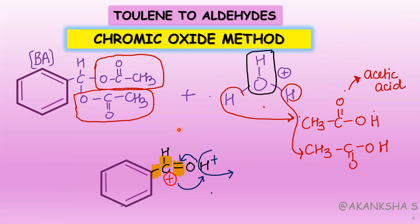These videos might be a bit lengthy because I'm explaining these reactions in detail — you may prefer watching at 2x speed if you already know this reaction. With this, we convert toluene to an aldehyde using chromic acid. I hope you have understood the method. Signing off, bye.